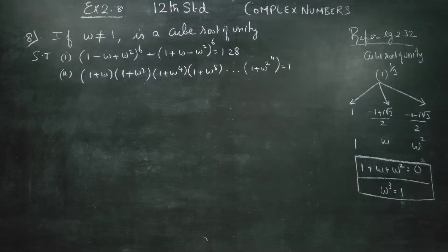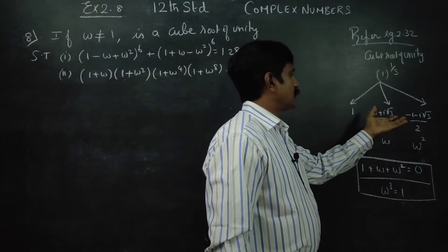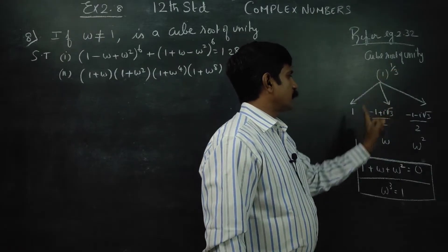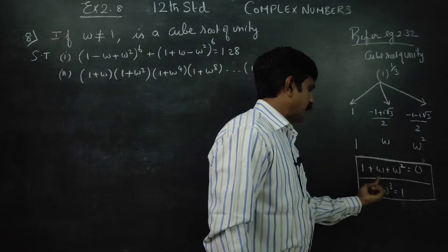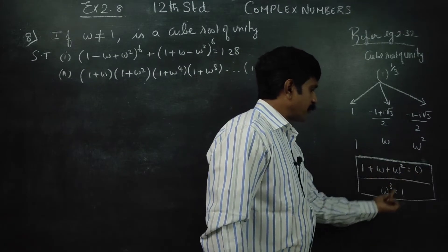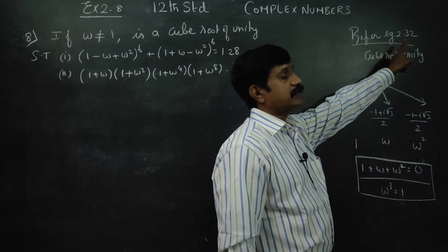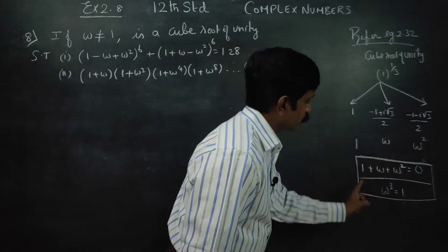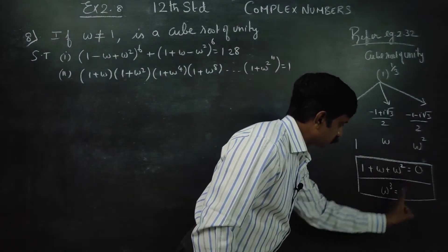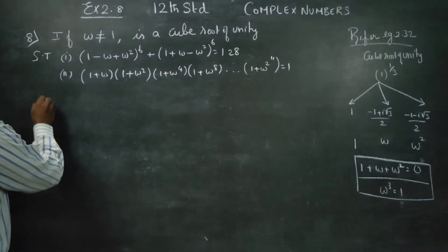Dear students, in exercise number 2.8, sum number 8. You very well know this is called cube root of unity. 1 raised to the power 1/3 — the three roots are 1, omega, omega squared. Adding them gives answer 0. Omega cube is equal to 1. These are the cube root of unity properties. Refer example 2.32. With the known formulas: 1 plus omega plus omega squared equals 0, and omega cube equals 1, let us do sum number 1.